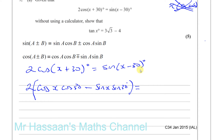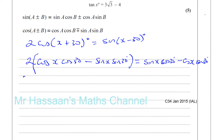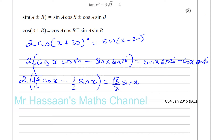The right side, sine(x - 30), follows sine(a - b) = sine a cosine b - cosine a sine b, giving sine x cosine 30 minus cosine x sine 30. Now, cosine 30 equals root 3 over 2 and sine 30 equals a half. So we have 2 times (root 3 over 2 · cosine x minus a half · sine x) equals root 3 over 2 · sine x minus a half · cosine x.